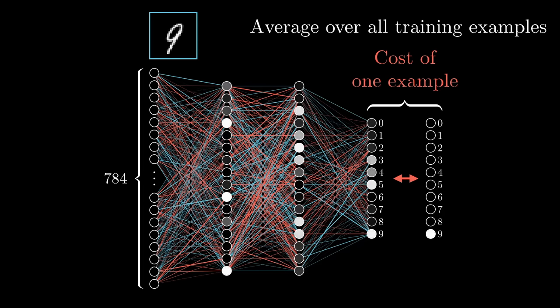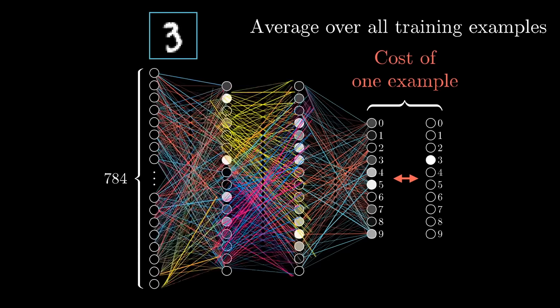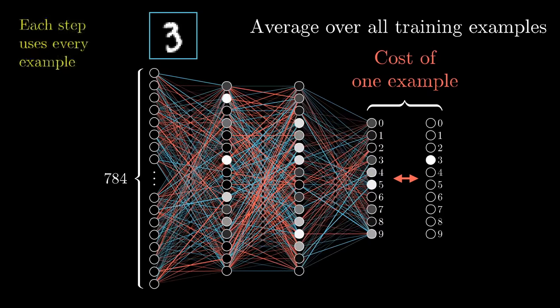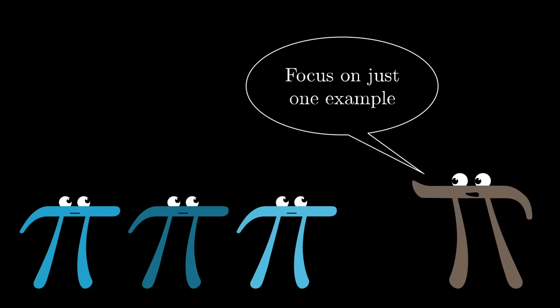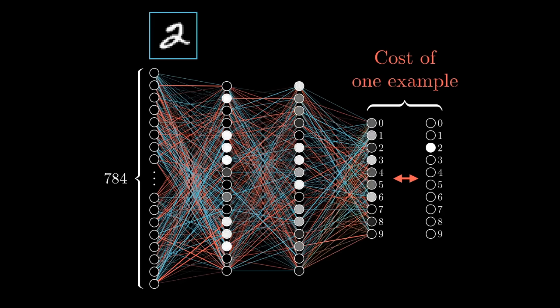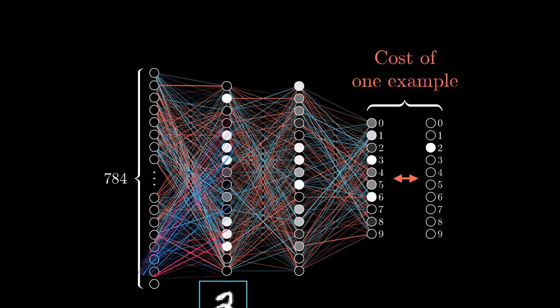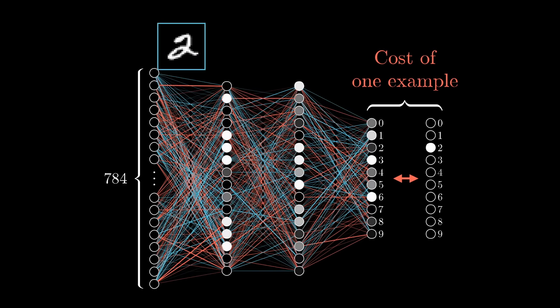Because the cost function involves averaging a certain cost per example over all the tens of thousands of training examples, the way that we adjust the weights and biases for a single gradient descent step also depends on every single example. Or rather, in principle it should, but for computational efficiency we're going to do a little trick later to keep you from needing to hit every single example for every single step. In either case, right now, all we're going to do is focus our attention on one single example, this image of a 2. What effect should this one training example have on how the weights and biases get adjusted?